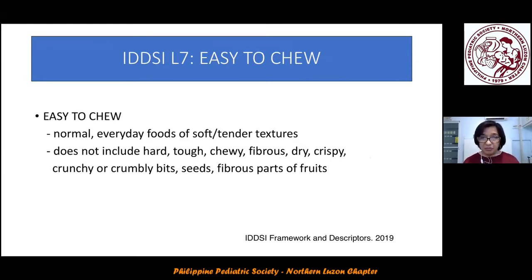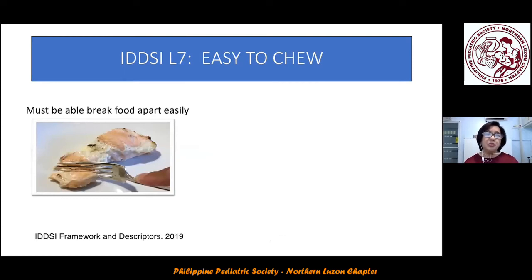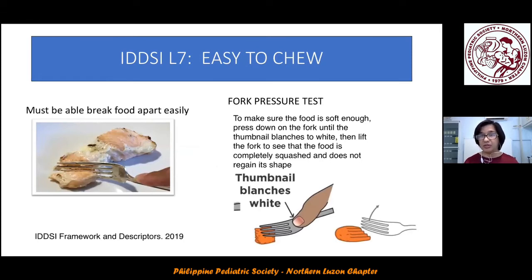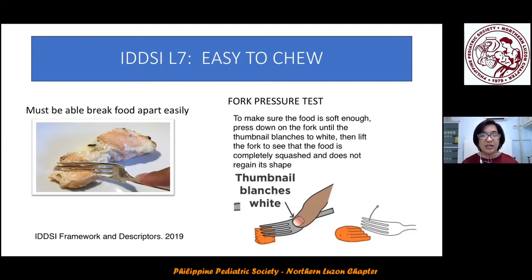Regular food has no issues with texture or consistency — normal everyday foods of various textures. Easy to chew refers to normal everyday foods of soft or tender textures. To test: using the side of a fork or spoon, the food must break apart easily. With the fork pressure test, press down until the thumbnail blanches to white, then lift the fork — the food should be completely squashed and not regain its shape.